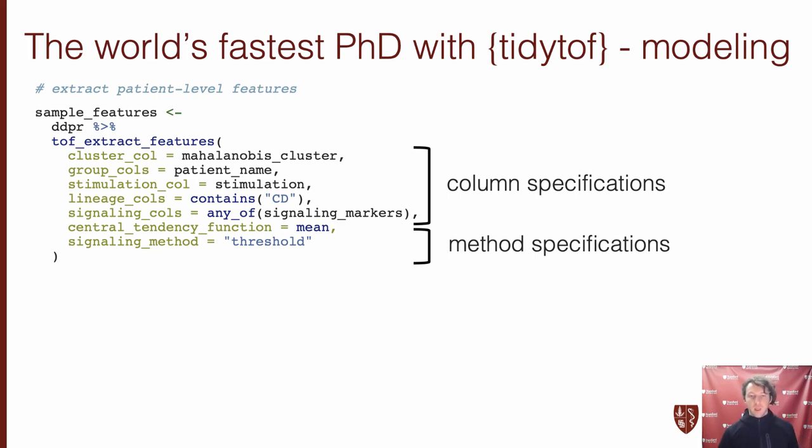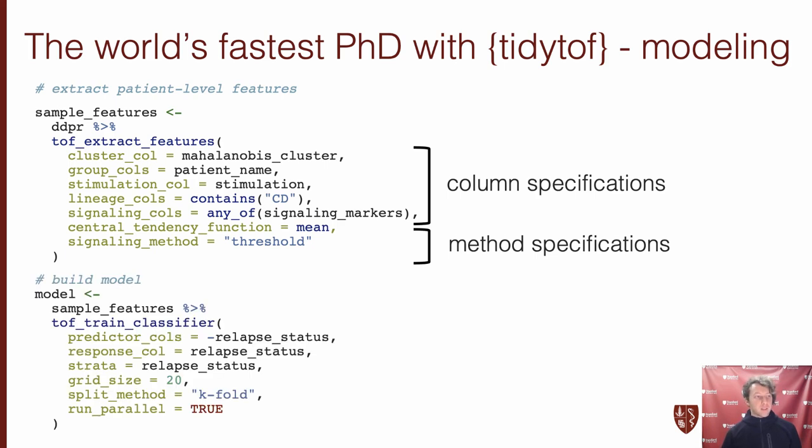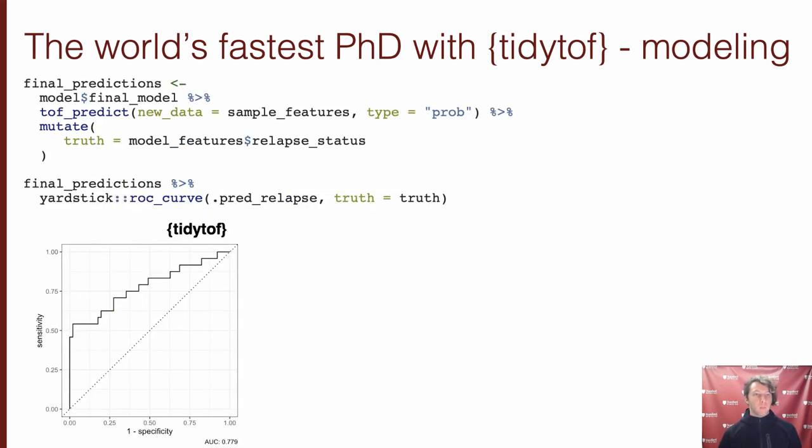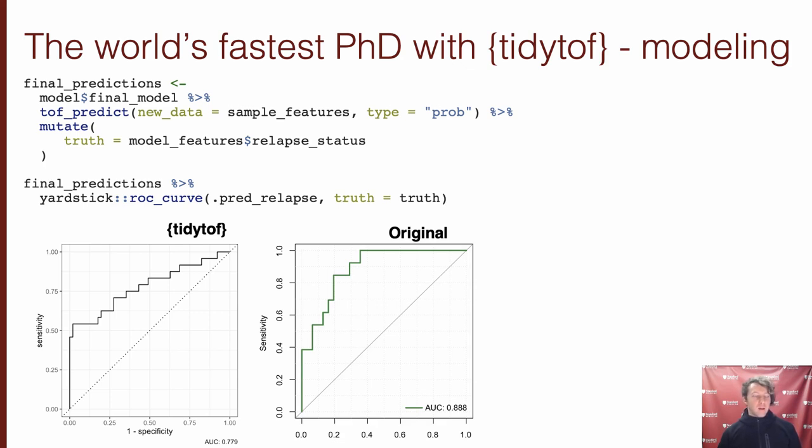Using these extracted features, we can then use the TOF train classifier verb with appropriate column and method specifications to build a tenfold cross-validated Glimnet logistic regression model classifying samples into relapse groups, which is exactly what the original study did. Then, with a little help from the yardstick package, we can plot an ROC curve for our model's cross-validated predictions and see that it's not too bad with an area under the curve of about 0.8. This is almost as good as the ROC curve from the original study, whose area under the curve was 0.88, which is mostly attributable to the fact that they had access to some metadata that we don't.